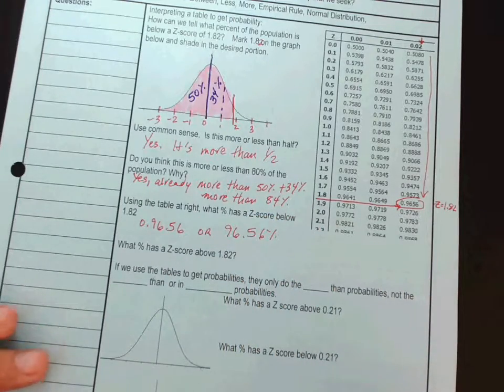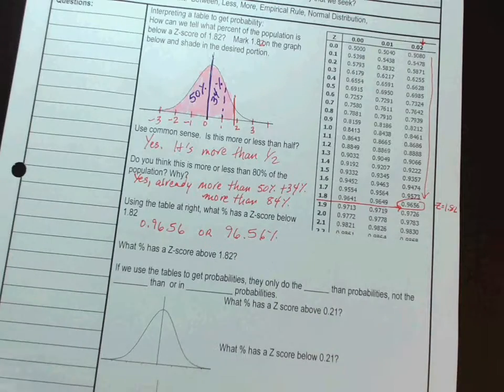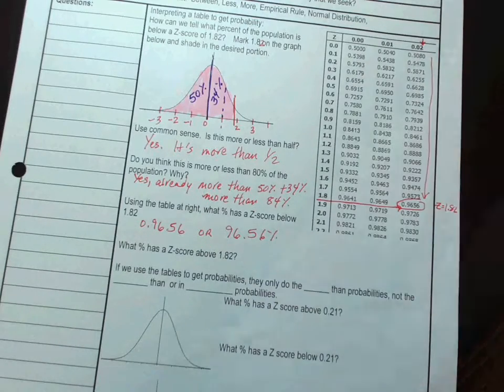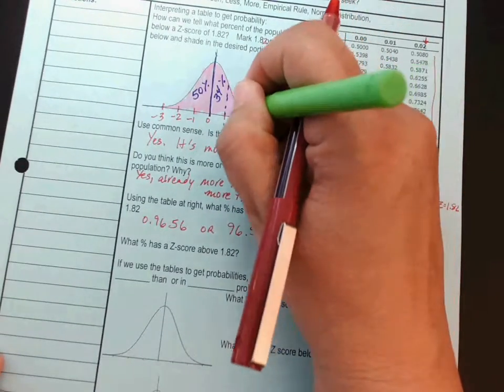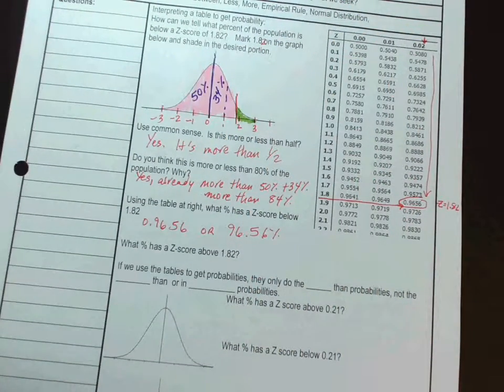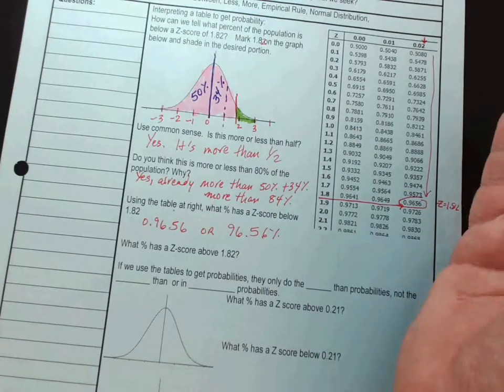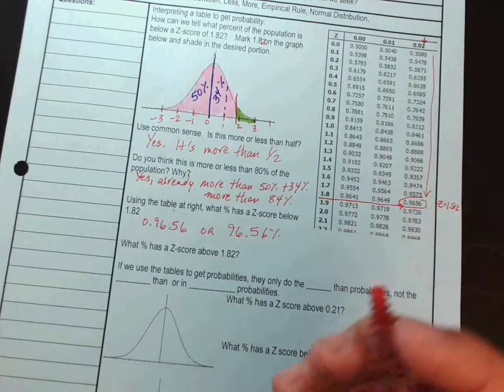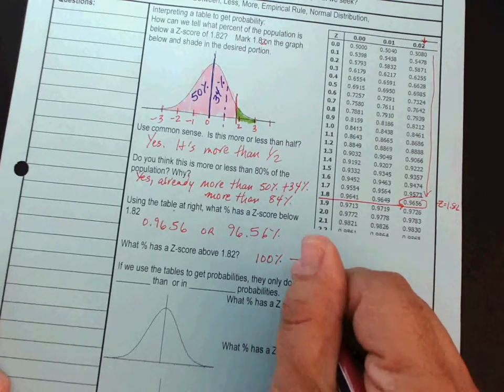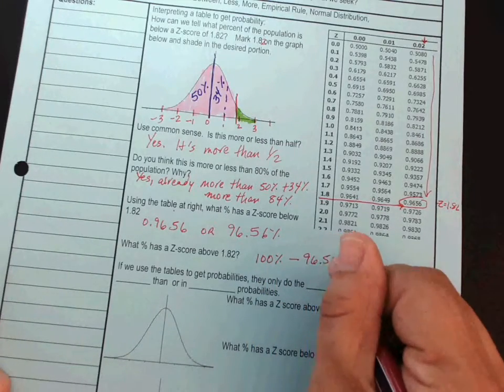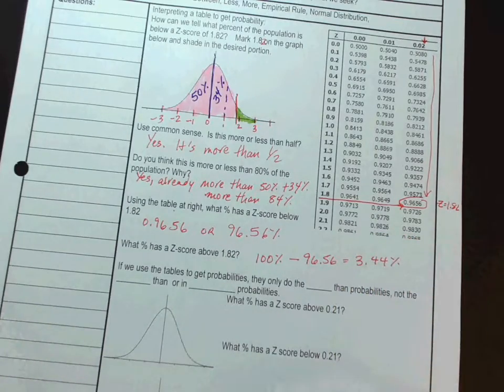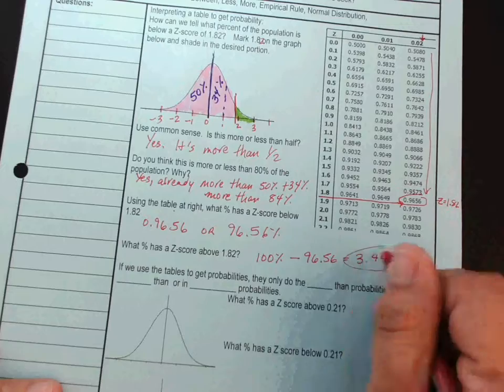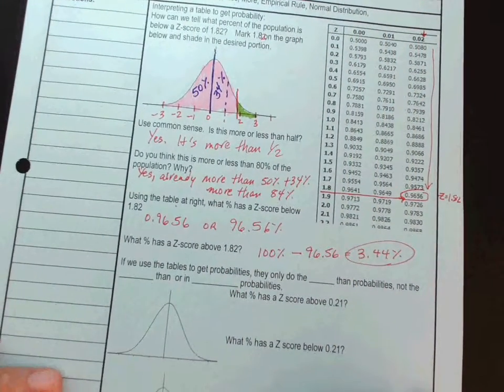So, that's the part that has below. But, what percentage is above 1.82? Well, above 1.82 would be this piece right here, right? And, if I, all these pieces have to add up to what? They have to add up to 100%. So, I just take 100% minus the 96.56%, which gives me 3.44%. And, there's your answer. About 3.44% are above that z-score.